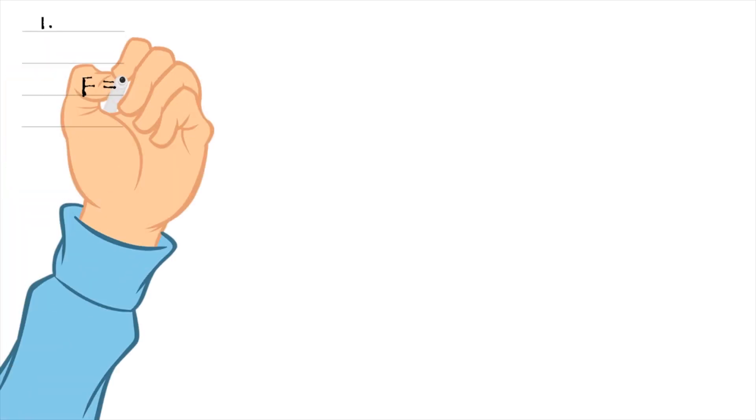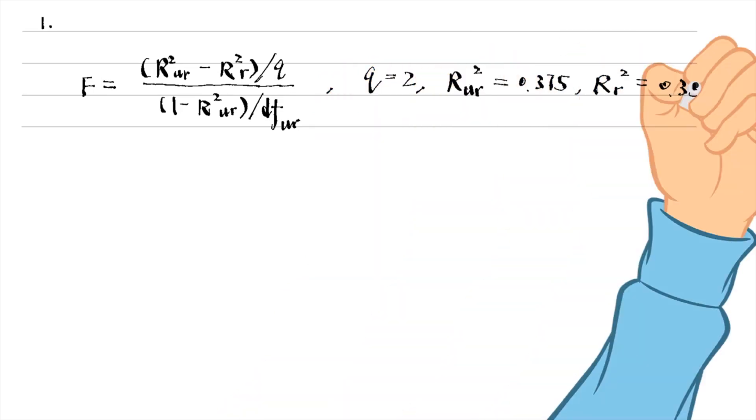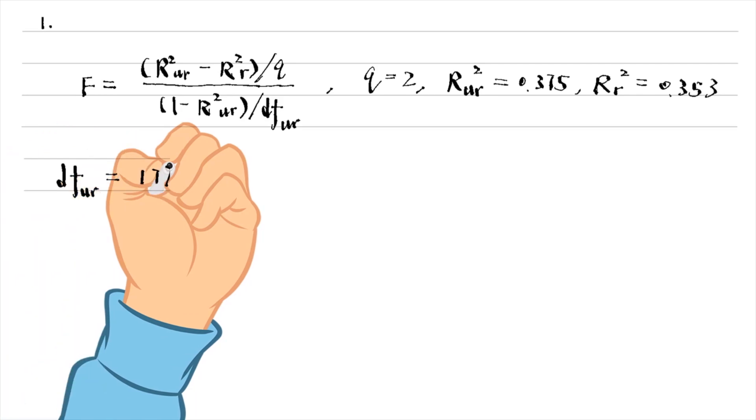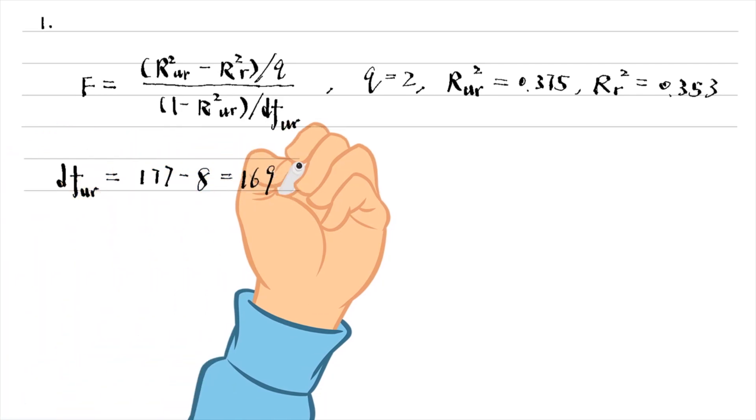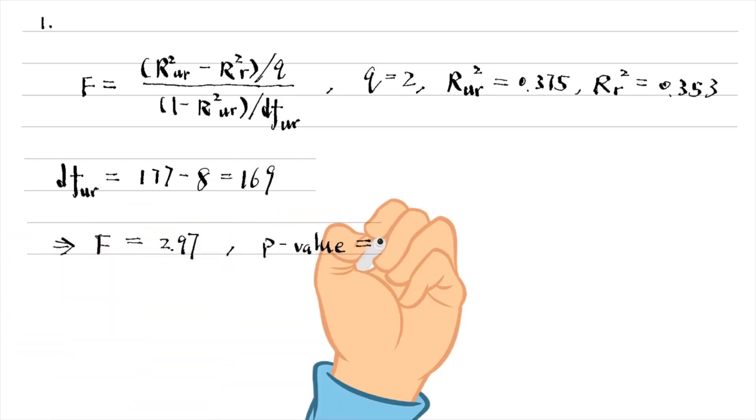Let's look at the first problem. Since we have unrestricted and restricted models, we can compute the R-squared form F-statistic. It is 2.97 and its p-value is 0.054.